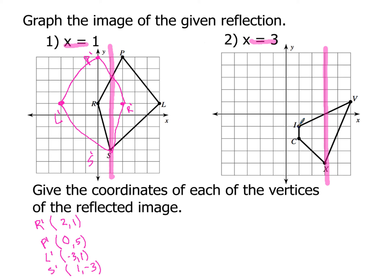this time point I is one, two away on the left-hand side. So I'm going to need to go one, two on the right-hand side of my line x equals three. So that's going to be where I prime is. Point C is one, two away. So again, that's going to be two on the right-hand side. So that's where C prime is going to be.